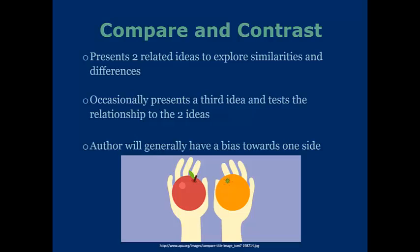Occasionally, a compare and contrast passage will present a third idea and test its relationship to the two main ideas. For example, going back to the apples and oranges analogy — if we were to bring up strawberries, we'd try to see how strawberries relate to those two ideas. You could note that a strawberry is red, just like an apple, and ask how that affects the relationship between apples and oranges. Often these passages will introduce other ideas, but ultimately they focus on two main ideas and discuss them. Take note that the author will often have a general bias one way or another.